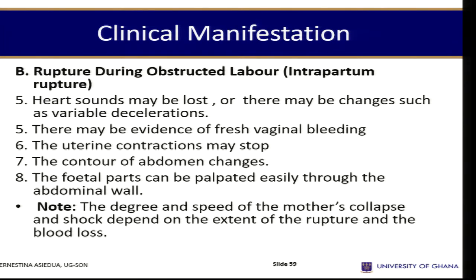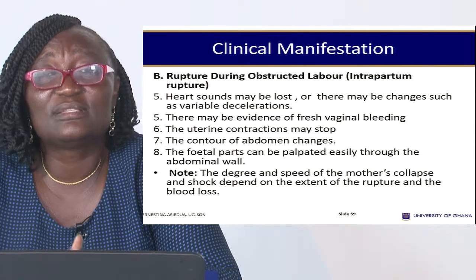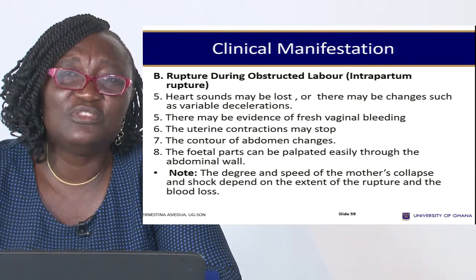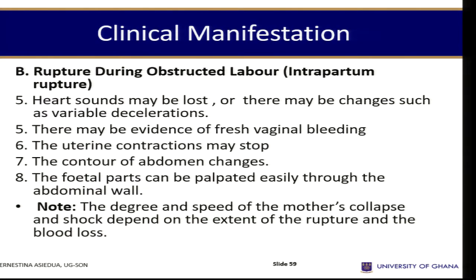With intrapartum rupture, fetal heart sounds may be lost or become very slow with missing beats. There may be evidence of fresh, bright-red vaginal bleeding from open blood vessels — different from ordinary labour bleeding. Uterine contractions may stop: after intense hyper-contractions, there are suddenly no contractions, indicating the uterus has ruptured and is no longer contracting. The contour of the abdomen changes and becomes saucer-shaped with a central depression.